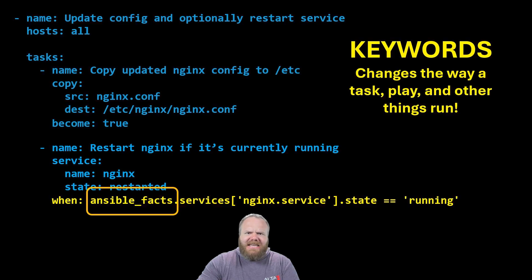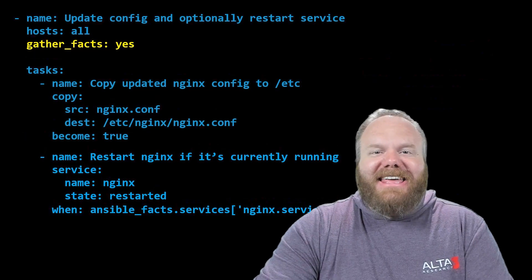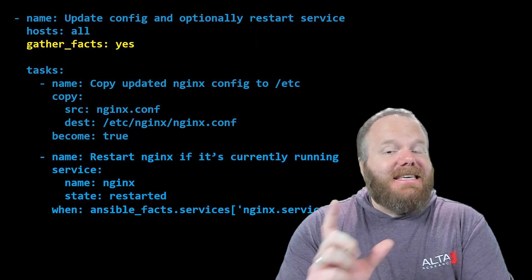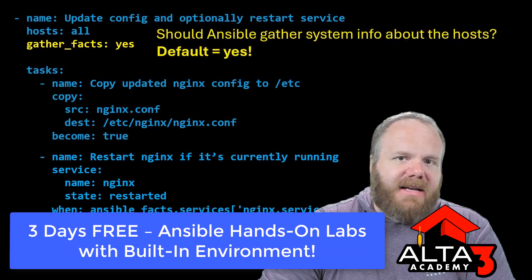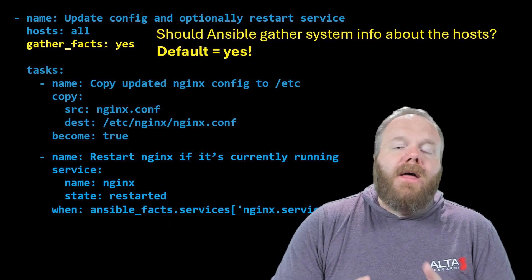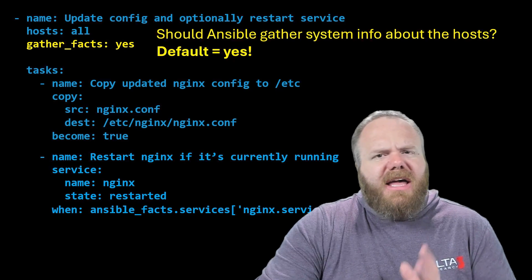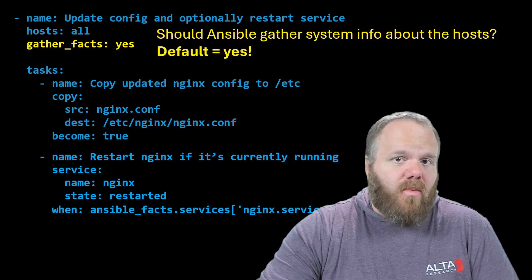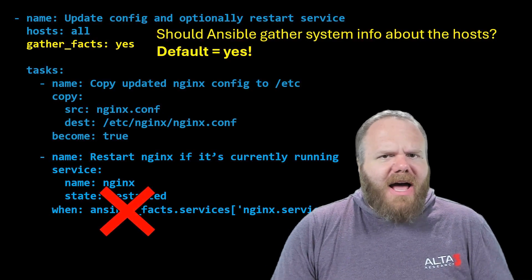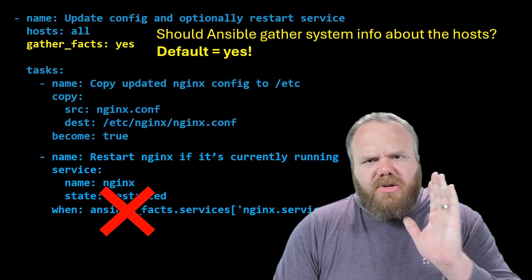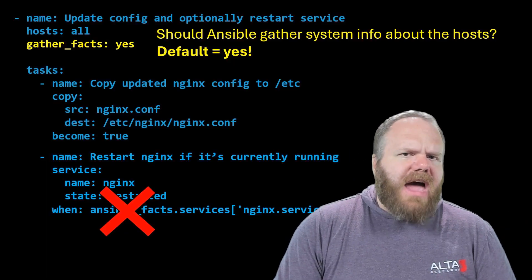Did Ansible magically gather information about my host and the state of its services? Heck yeah, it did. Because there is another keyword that is by default set to yes at the top of your plays: gather_facts. And when gather_facts is set to yes, it means Ansible is going to gather system info about any hosts you're working with. It's usually best to have gather_facts turned on, because if you don't, tasks like the service task would fail — when it tries to look up those Ansible facts and doesn't have them, your playbook is going to error out. So unless you know for a fact you don't need any information gathered about your host, leave gather_facts turned on.